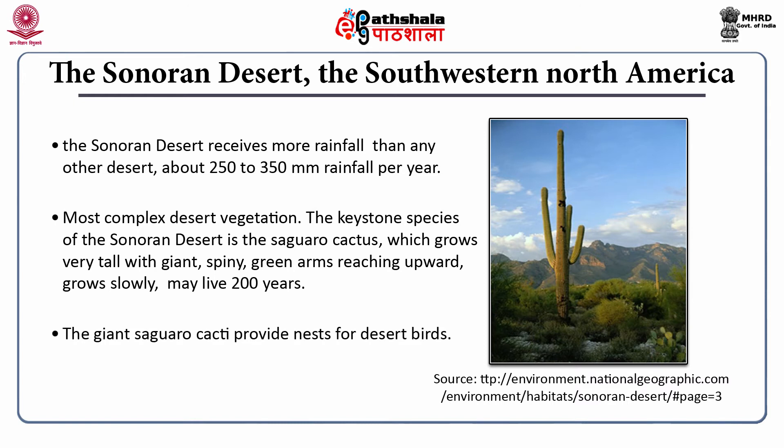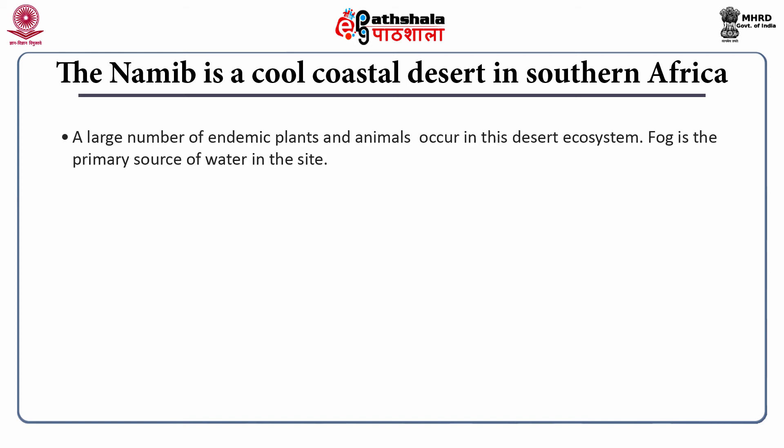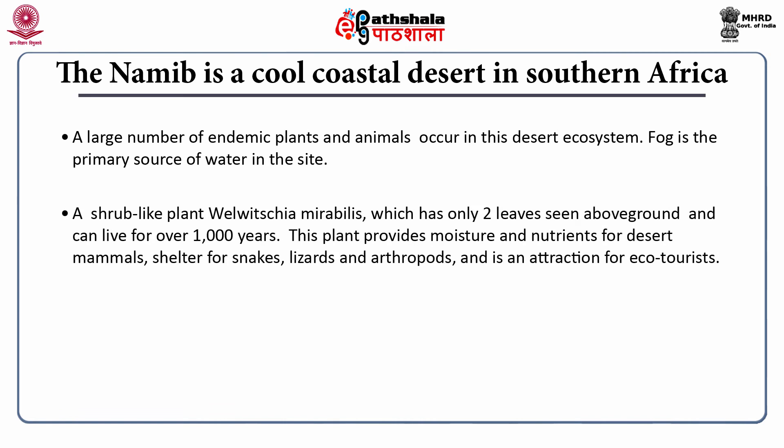The Namib desert is a cool coastal desert in southern Africa with a large number of endemic plants and animals. Fog is the primary source of water. The shrub-like plant Welwitschia mirabilis has only two leaves seen above ground and can live for over 1000 years. This plant provides moisture and nutrients for desert mammals, shelter for snakes, lizards and arthropods, and is an attraction for eco-tourists.